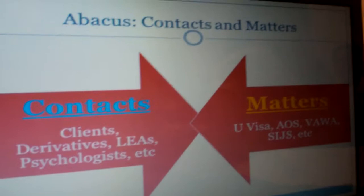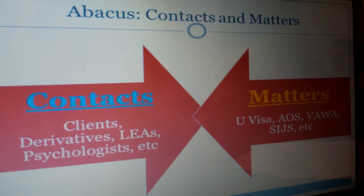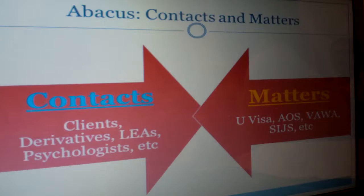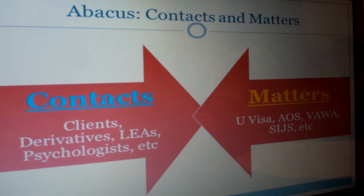Matters are gold screens and contacts are blue screens. When you think of a gold matter screen, you should think of the principal applicant's page — their case page is the gold matter screen. How we're using Abacus is you're only creating matters for the principal applicant in a case. If you sign a new retainer with a new principal, that's the matter screen. Contacts is for everyone — everyone has their own basic contact page, including the principal applicant. The principal will have both a contact page and a matter page, and the matter page for the principal's case will have contacts linked to it for everyone in that case, including the principal, derivatives, law enforcement, therapists, and whoever else you may have a contact for.